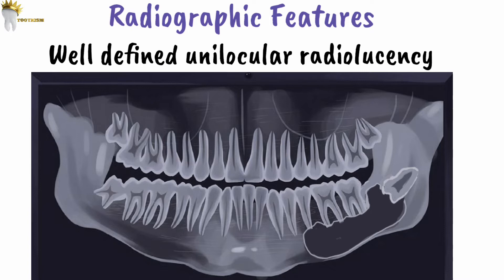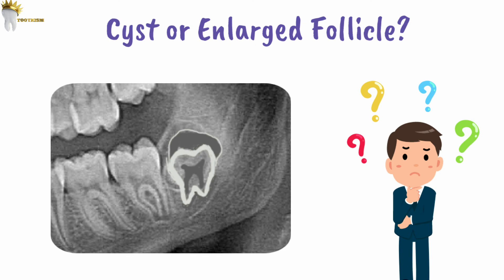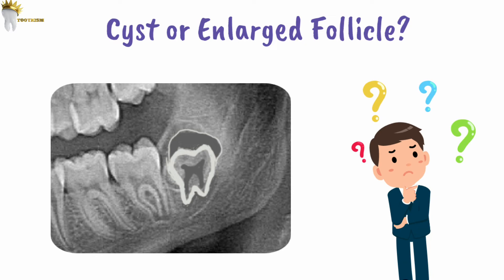When the cyst is large, it can displace the impacted tooth it surrounds — you might see the tooth pushed into the ramus. Since this cyst is associated with an unerupted tooth, the radiolucency surrounds the crown. Radiographically, three types are seen: central, where the radiolucency surrounds just the crown; lateral, where the cyst develops along the root and only partially surrounds the crown; and circumferential, where the cyst appears to cover the entire tooth, surrounding the crown and extending down onto the root.